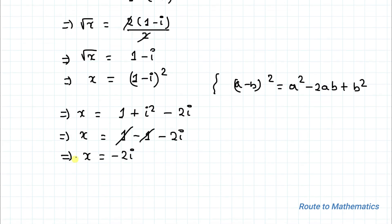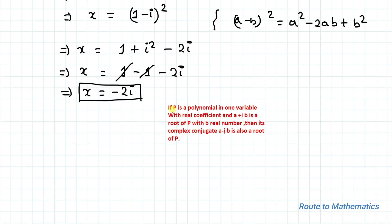So we are getting x equals minus 2 iota. But the complex conjugate roots theorem states that if p is a polynomial in one variable with real coefficients and (a plus ib) is a root of p, then its complex conjugate (a minus ib) is also a root of p. According to this theorem, the conjugate is also a root of x, so x equals 2 iota is also one of the roots. Thus x equals plus or minus 2 iota are the roots.